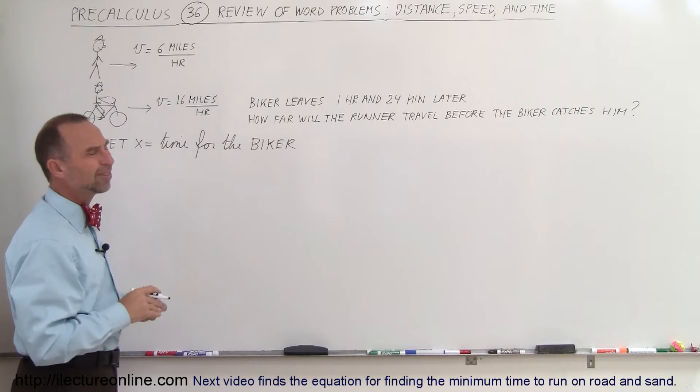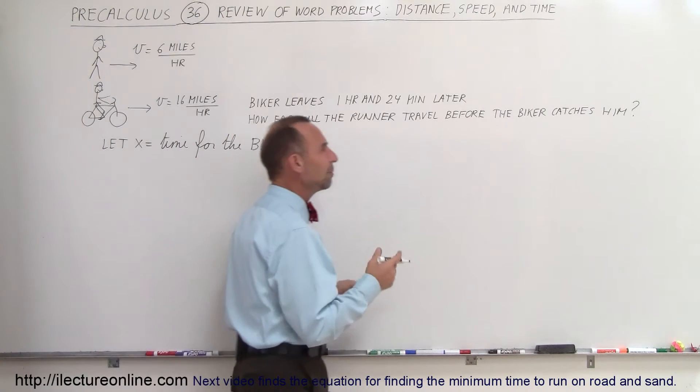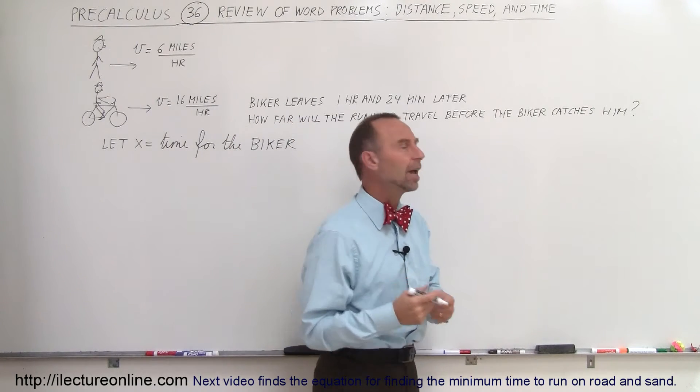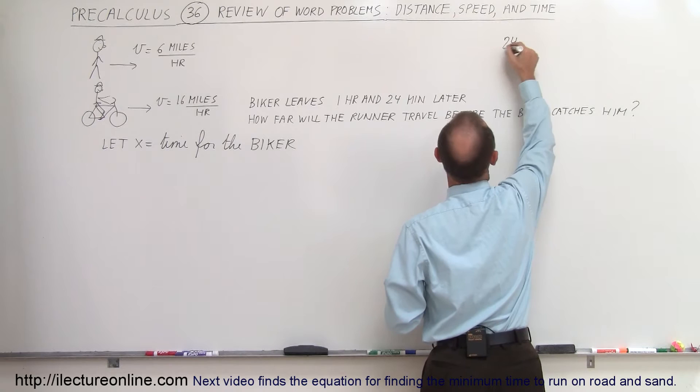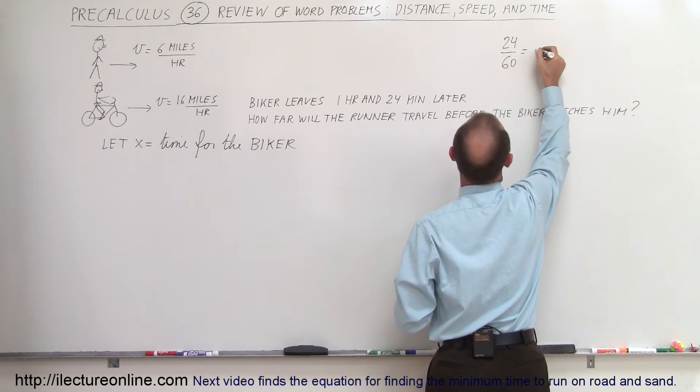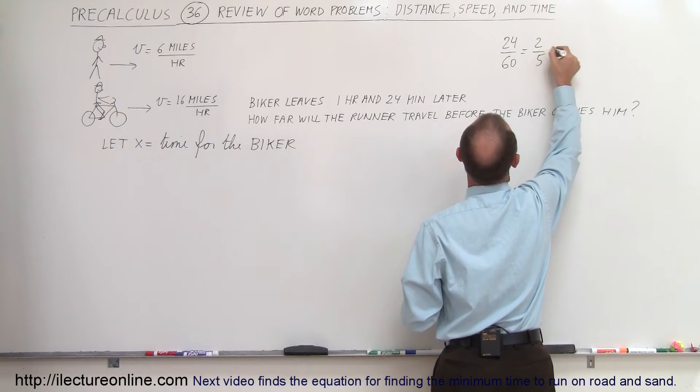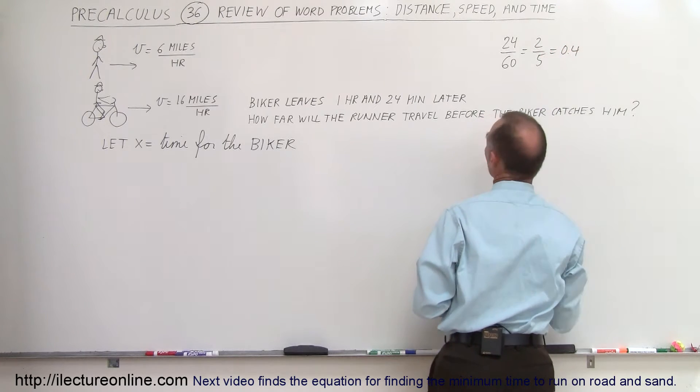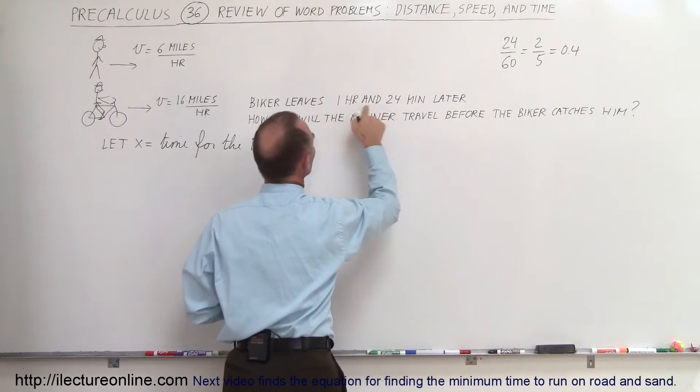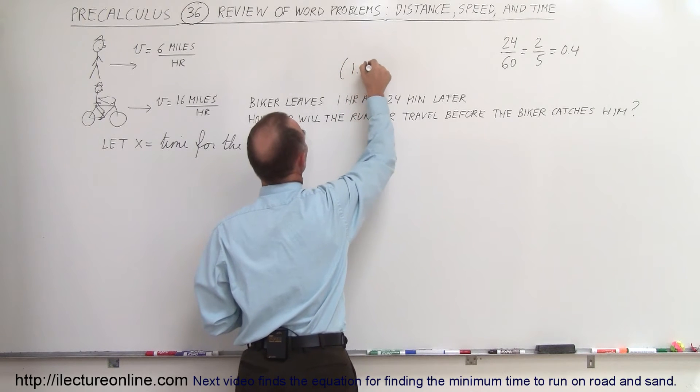Let's change it into a decimal because 24 minutes, what is that as a fraction of an hour? And so we can say that 24 divided by 60 is equal to two-fifths which is equal to 0.4. So we can substitute for an hour and 24 minutes, we can call that 1.4 hours.